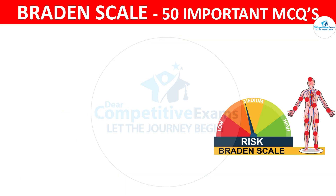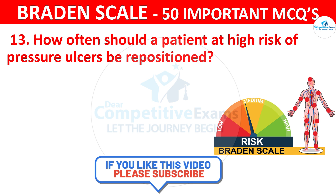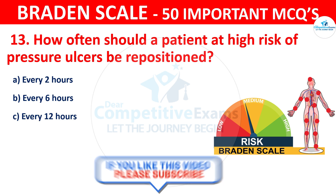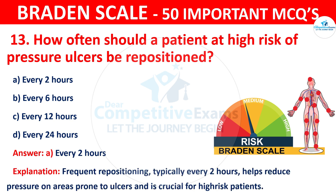Question number thirteen: How often should a patient at high risk of pressure ulcers be repositioned? The options are every 2 hours, every 6 hours, every 12 hours, or every 24 hours. The correct answer is A — every 2 hours. Frequent repositioning, typically every 2 hours, helps reduce pressure on areas prone to ulcers and is crucial for high-risk patients.